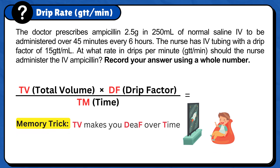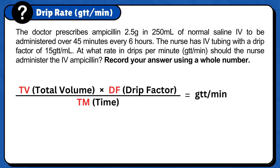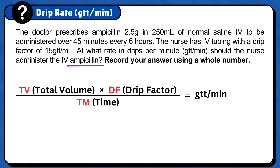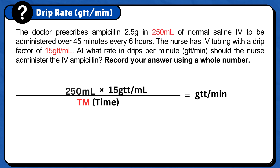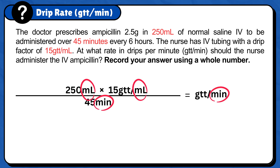The next step is to add the unit answer, gtt per minute, because the question is asking at what rate in drips per minute should the nurse administer the IV ampicillin. Now that the formula is ready, we need to plug in the numbers. Start with drip factor because it is usually given to you — for this problem it is 15 gtt per milliliter. For total volume, plug in the doctor's order in volume, which is 250 milliliters. And for time, plug in the time that will take for the prescription to be administered, which is 45 minutes. Since everything is in the right units, like milliliters and minutes, no conversions are needed.